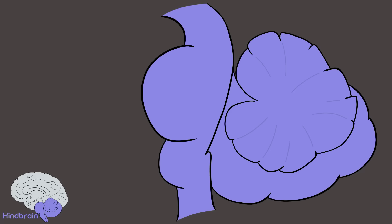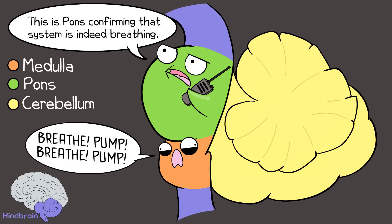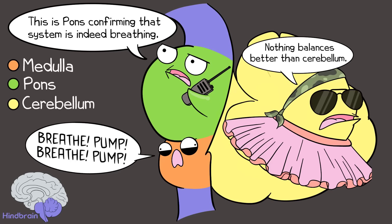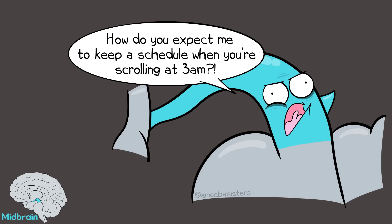Looking at the hindbrain first — it includes the medulla, pons, and cerebellum. The medulla has many regulation functions such as breathing, blood pressure, and heart rate. The pons is involved with some of these functions as well, and also coordinates signals to the rest of the brain. The cerebellum handles balance and movement coordination. The midbrain — deep in the brain — is involved in alertness, the sleep-wake cycle, motor activity, and more.